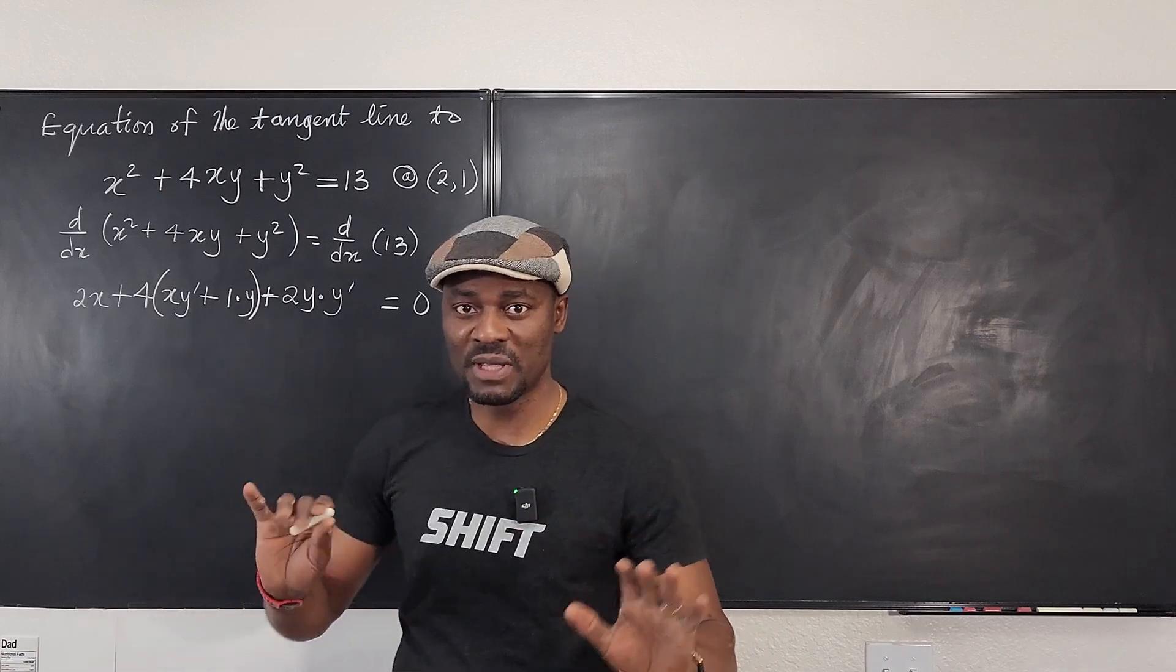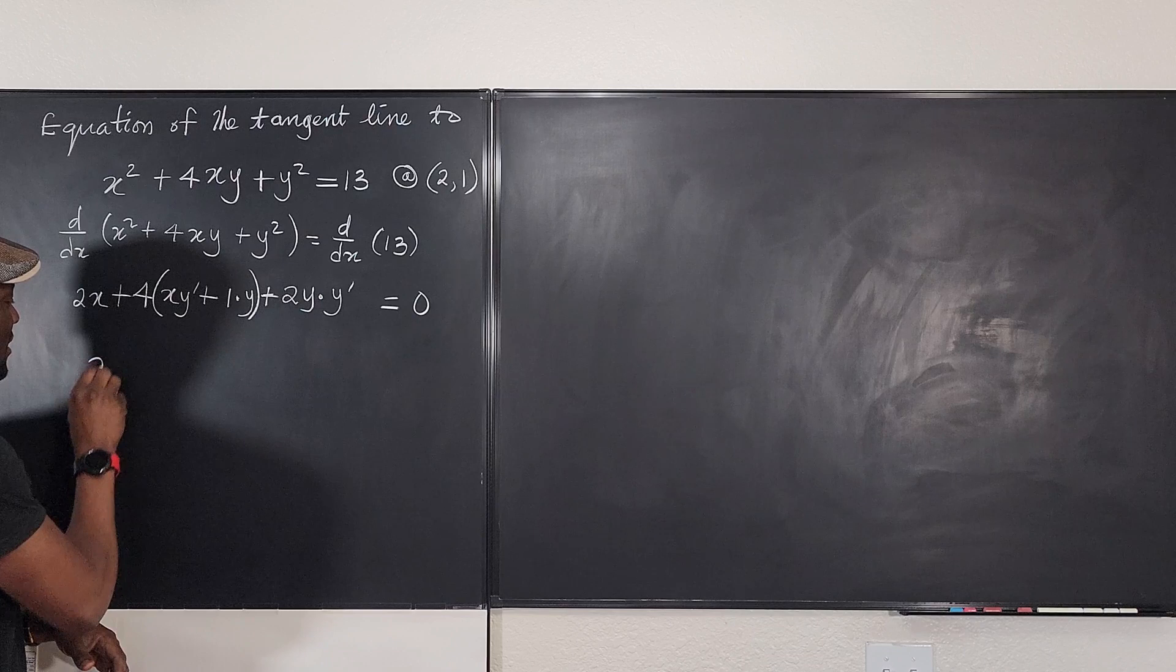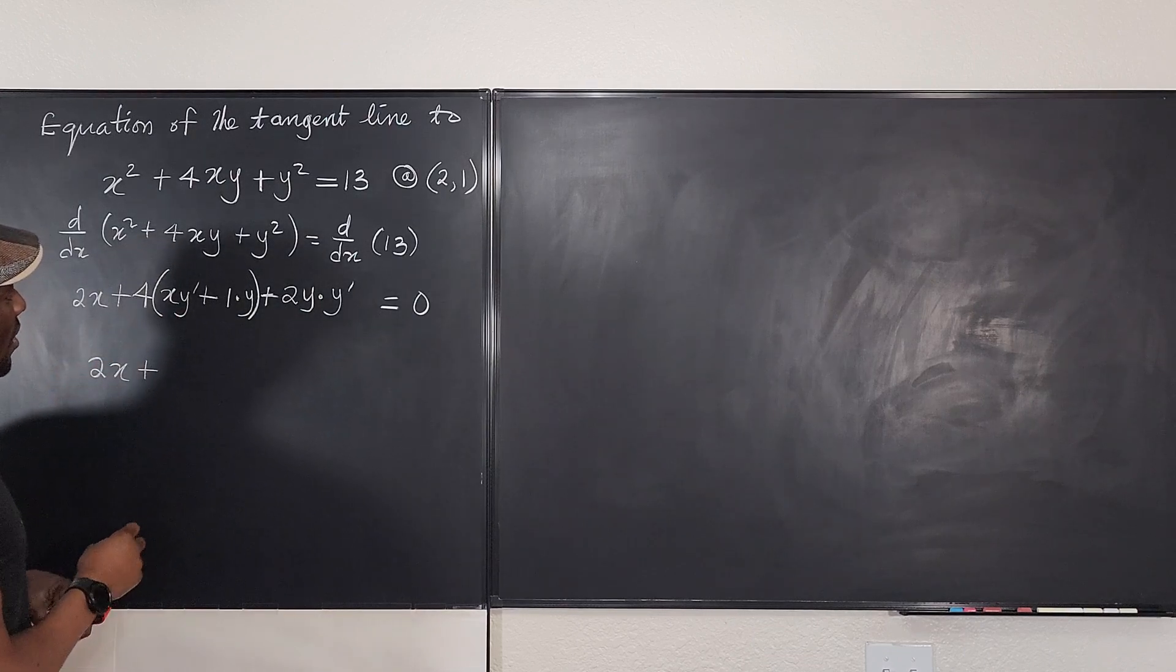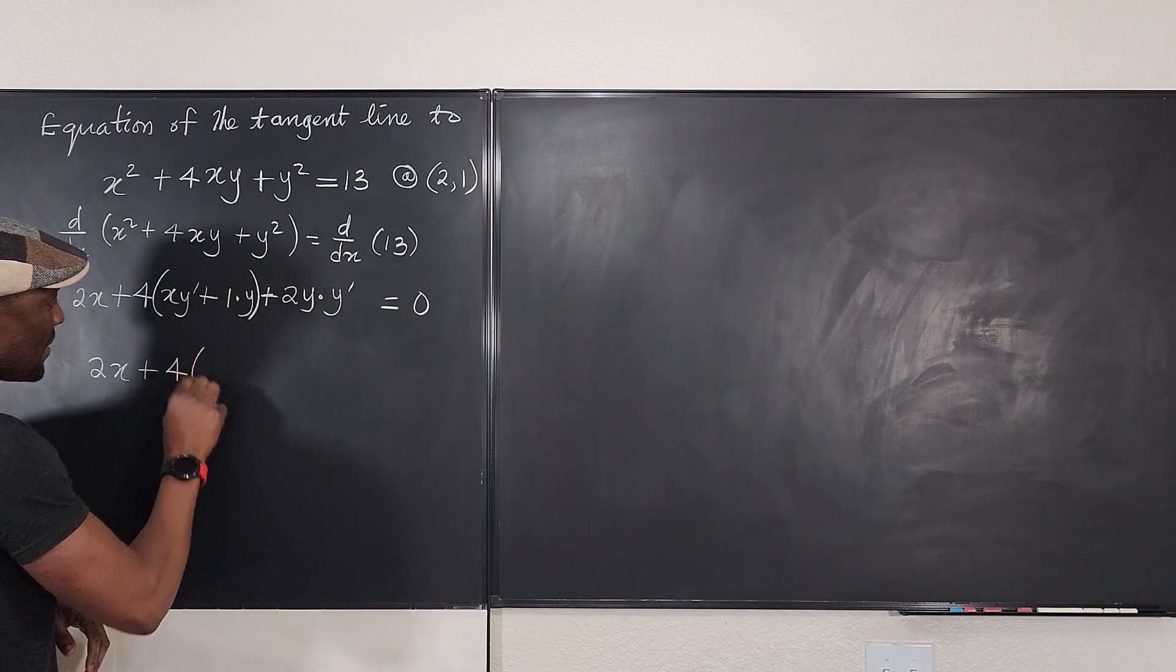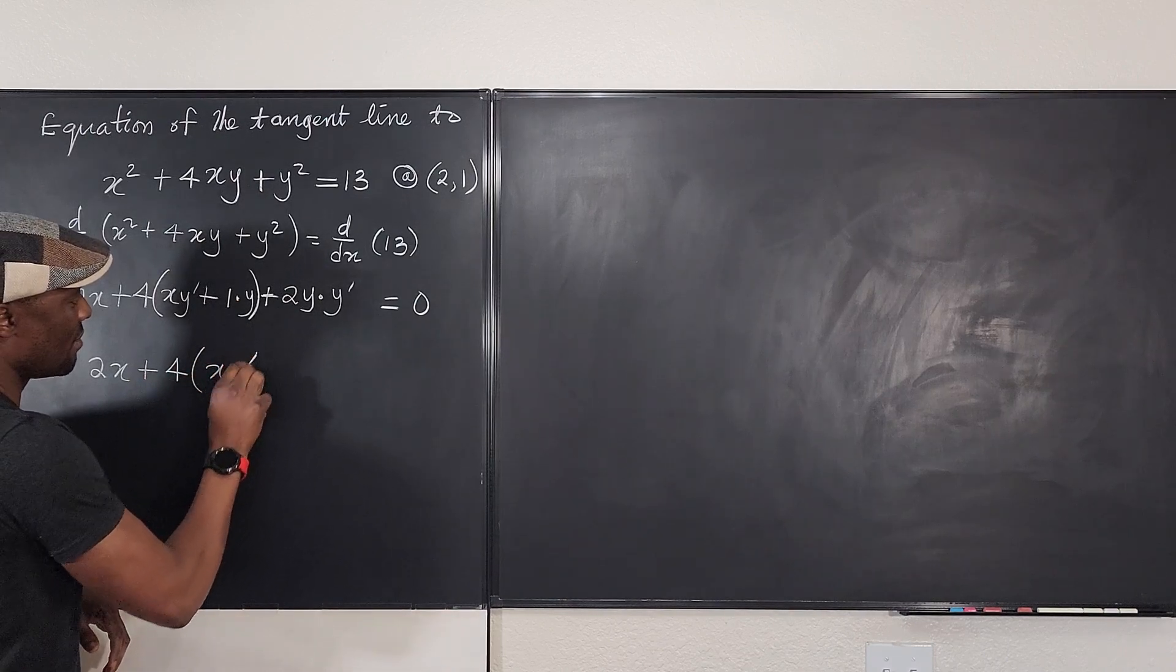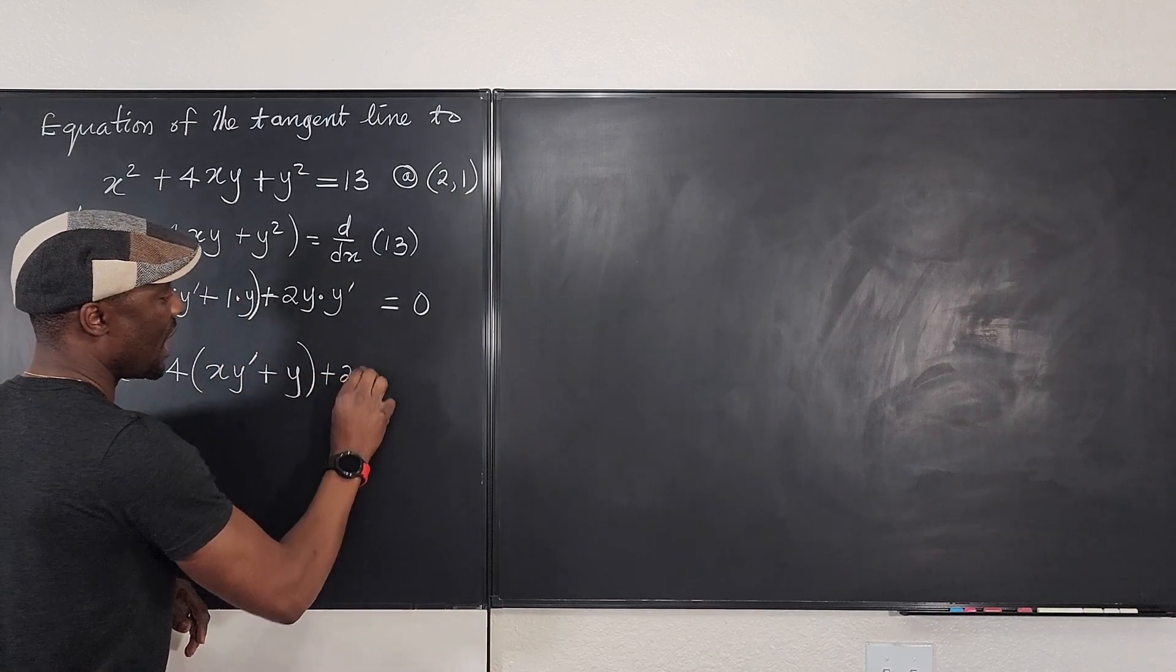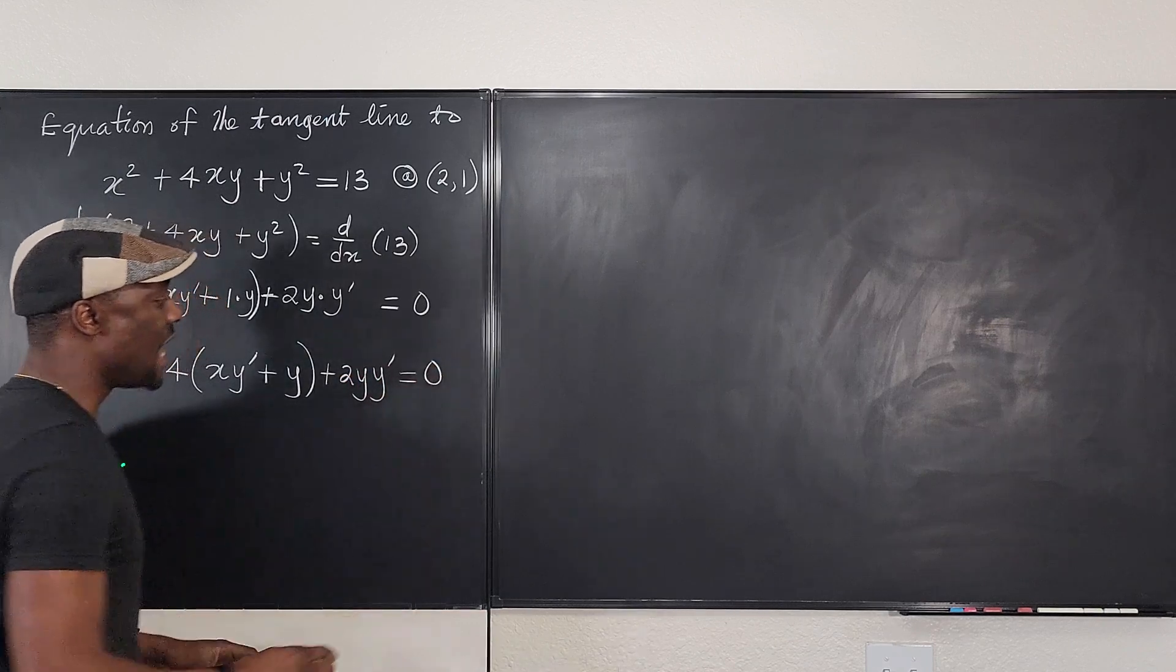The best you can do is distribute, don't even distribute. Let's clean up all the multiplications first. I want to remove all these dots. So let's rewrite this as 2x plus, you can distribute this if you want, which I don't think I want to do. I'm still going to leave it this way. This is going to be x y prime plus y. That's what's here plus 2y y prime. And here I'm going to have 0.